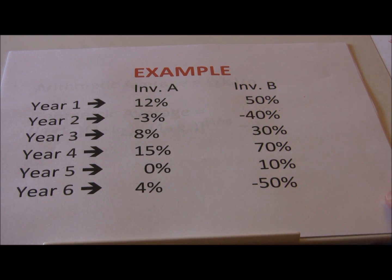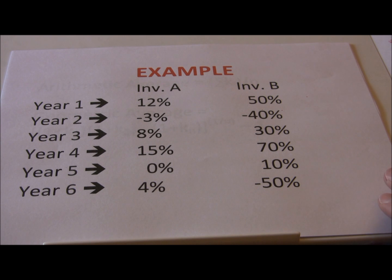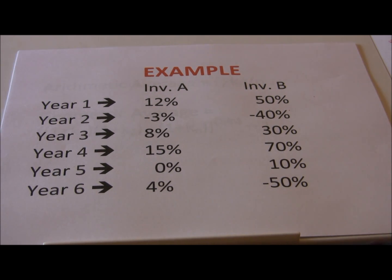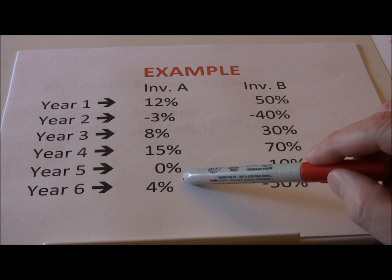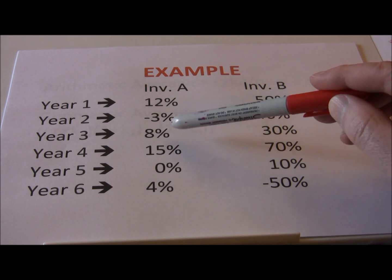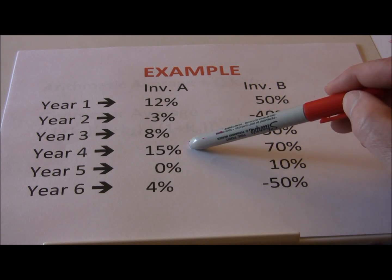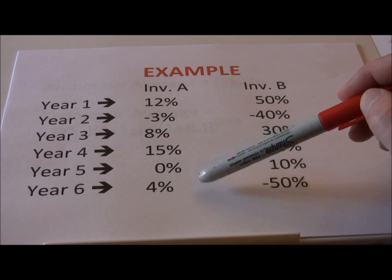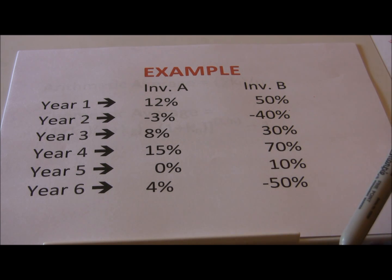With a two-period example it's very easy to look at the real return, but let's walk through a more complicated example. Let's say we have two investments, investment A and investment B, and we're looking at six years worth of returns. In investment A, returns tended to be lower but more stable. Twelve percent return in year one, negative three percent in year two, eight percent in year three, fifteen percent in year four, no return in year five, and finally a four percent return in year six.